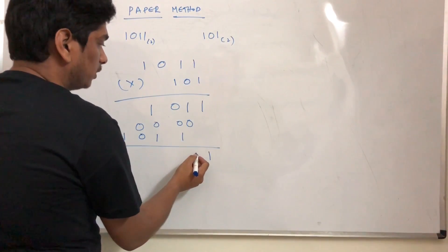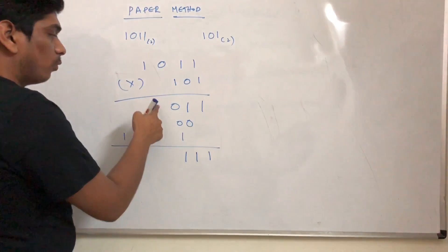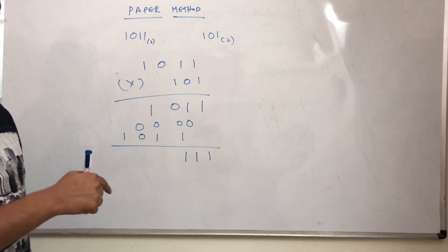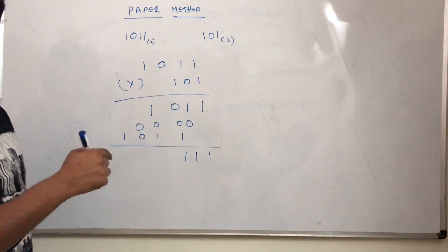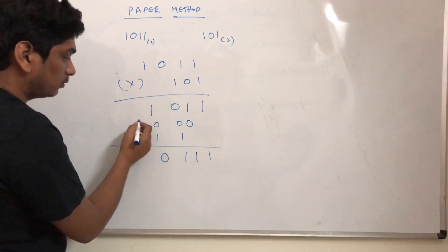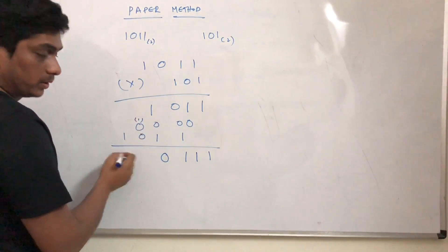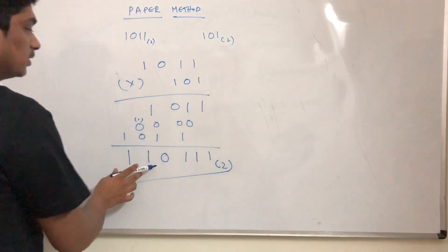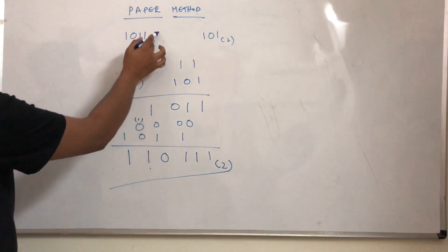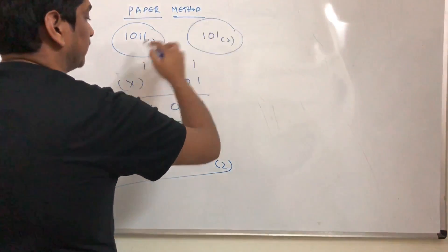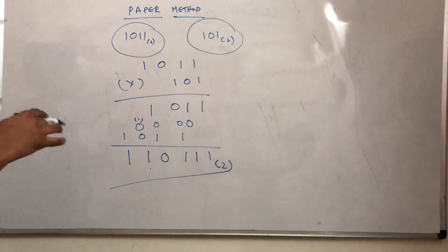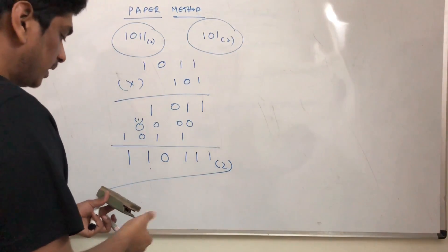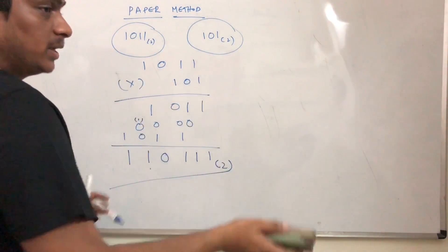Now add them up. This gives 1, 1, 1, and then 1 and 1 is 0 with a carry of 1, so this is a 0 with a carry of 1. So I have 1 and 1. This is the product of these two binary numbers. This is how you do multiplication using the paper method, and it applies to any big numbers.